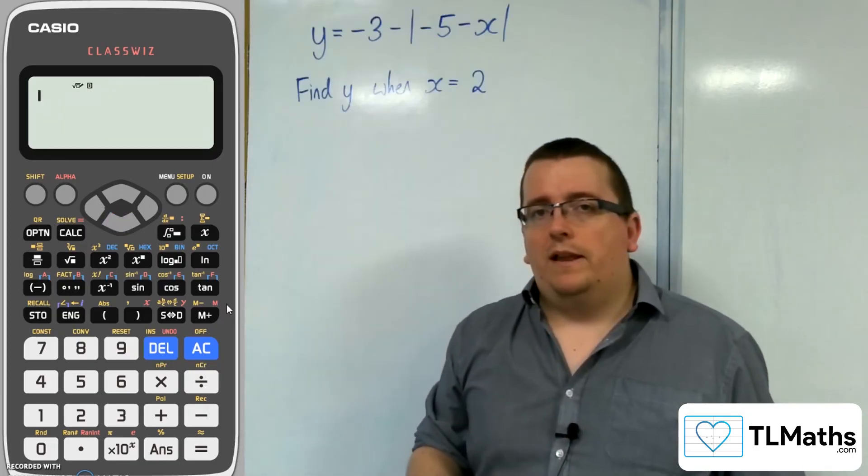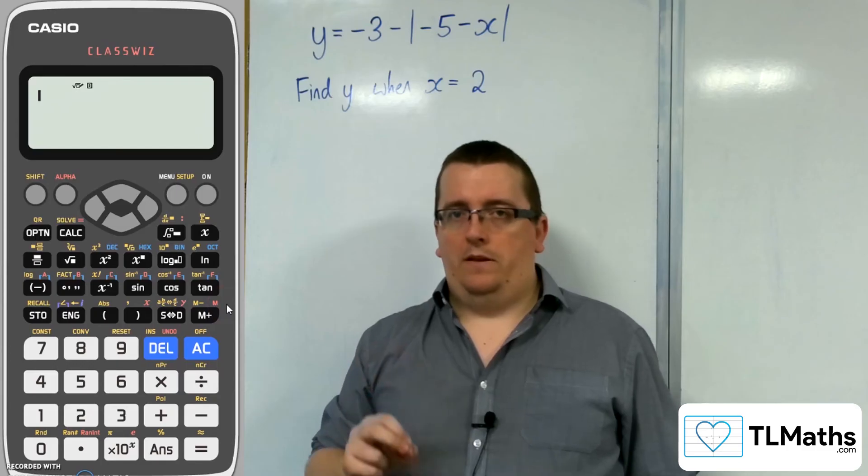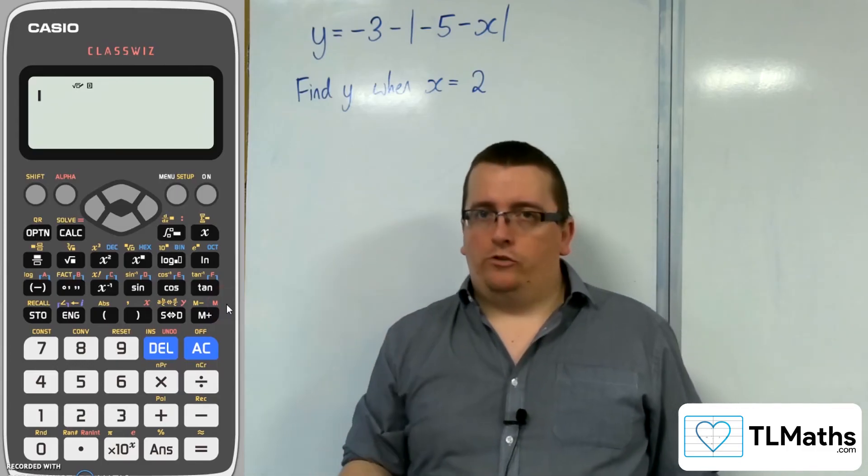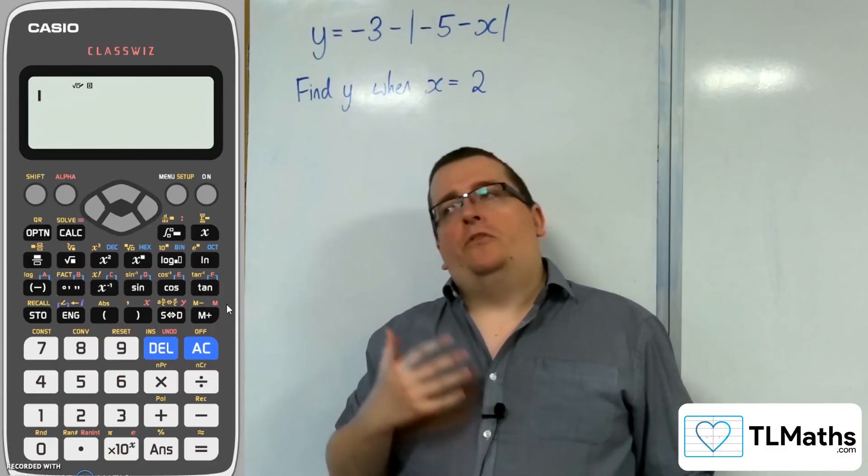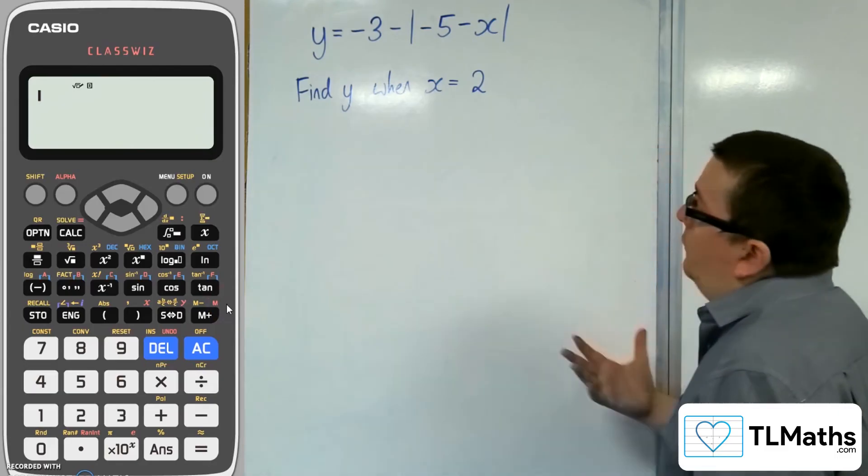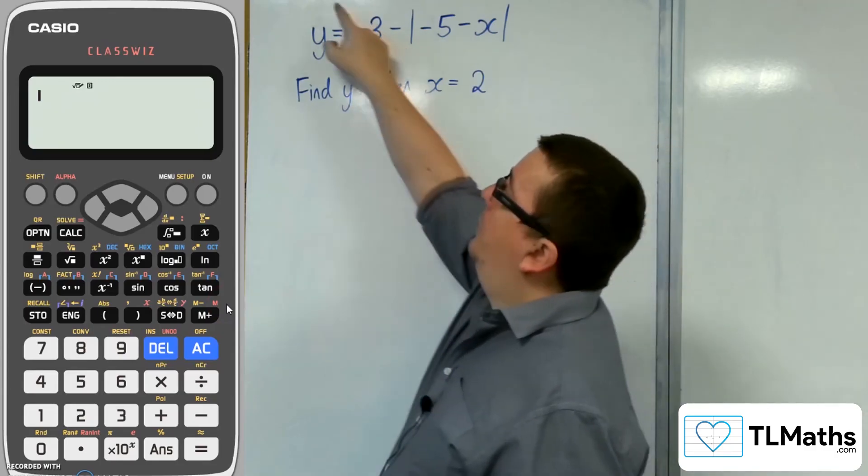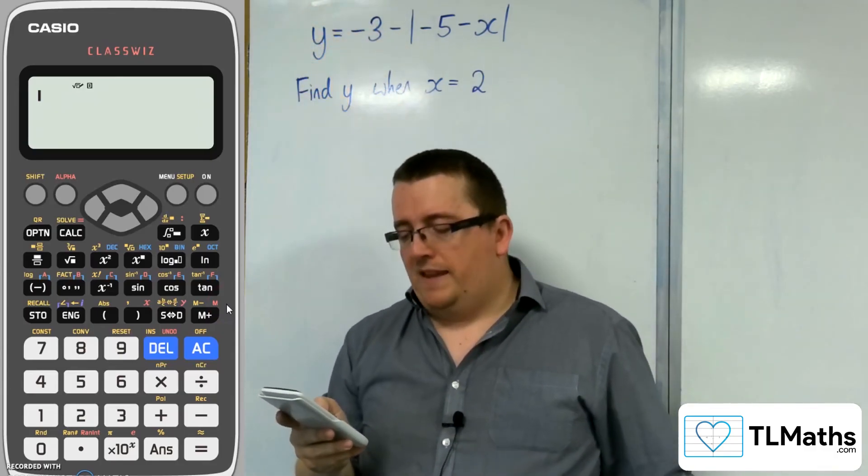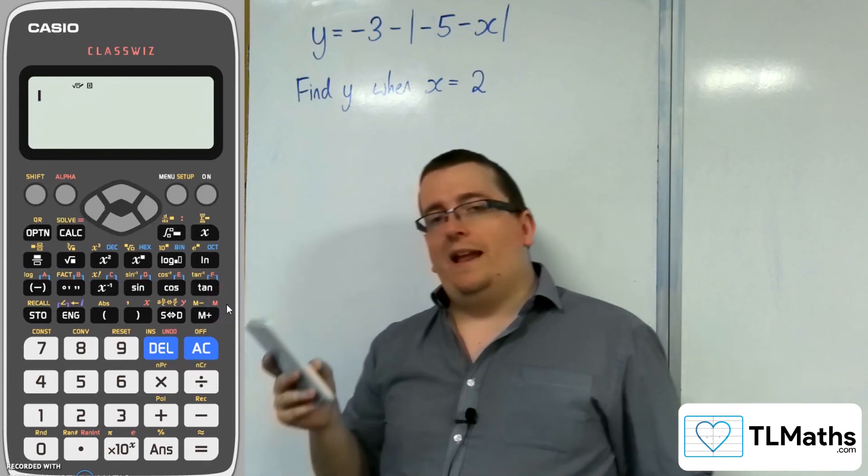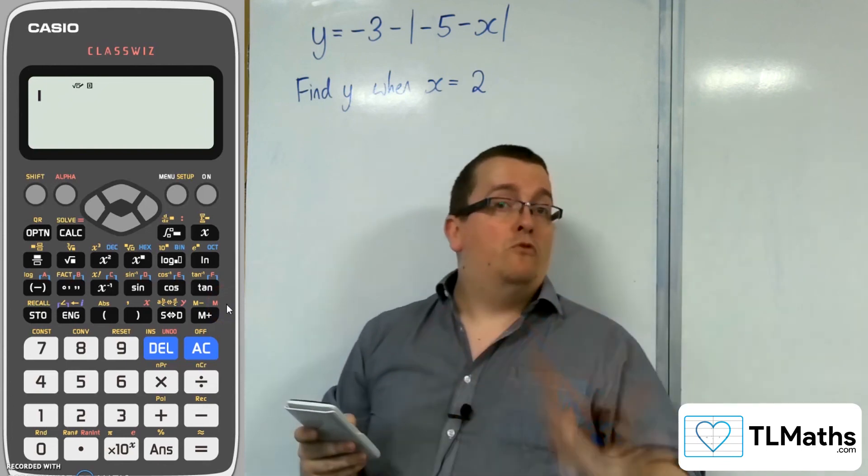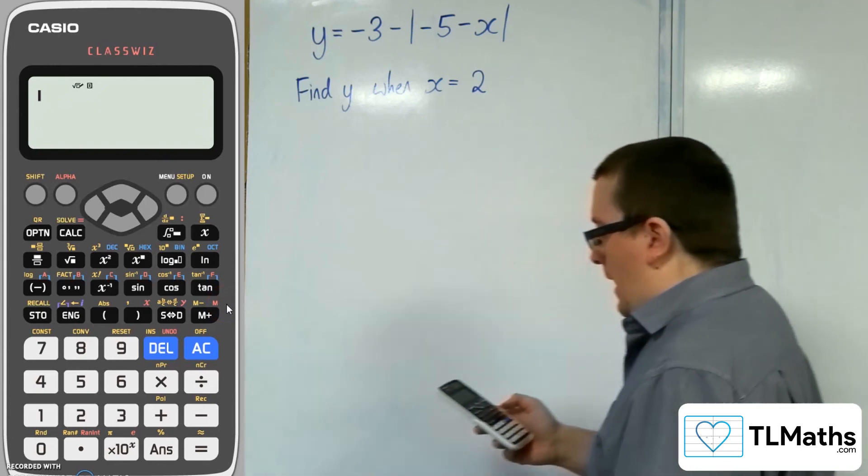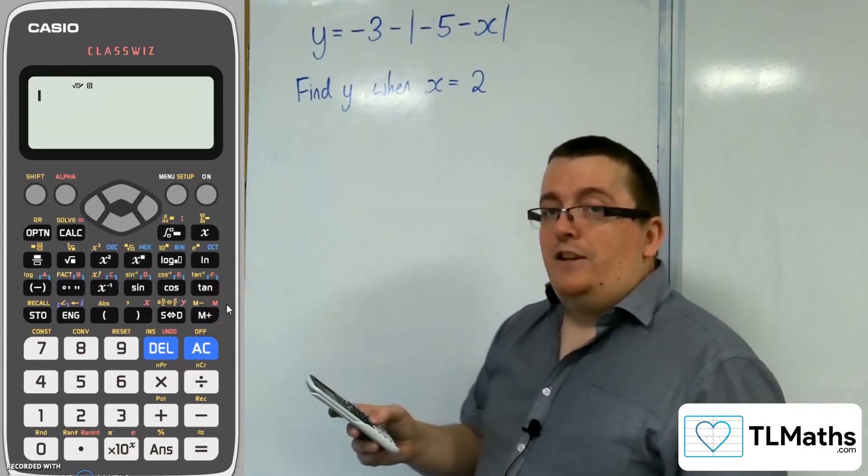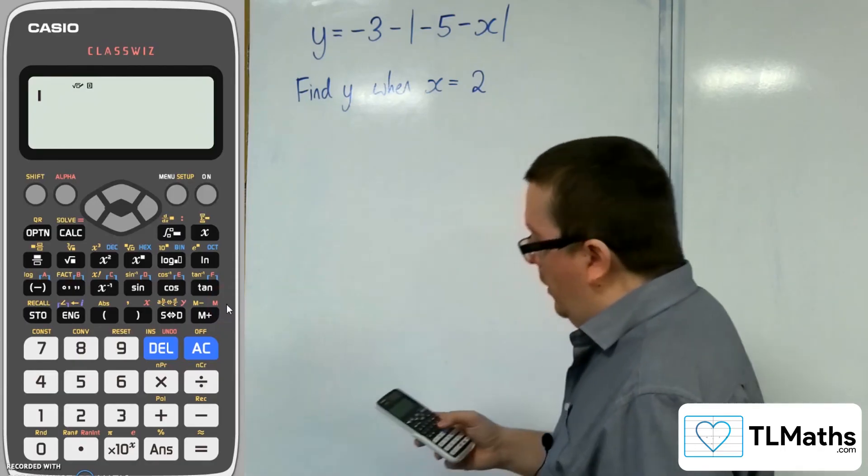The last thing in my list is the ABS button. The modulus function is otherwise referred to as the absolute value. That's why it's abbreviated on your calculator ABS. You may not have spotted this before. The ABS button is on the left-hand bracket, the left-hand parenthesis, just to the right of the ENG button.